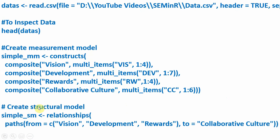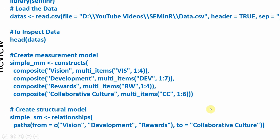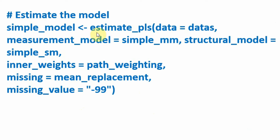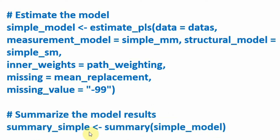Following this we specify our structural model — that is, what are the relationships in our model. These are the paths from vision, development, and rewards to collaborative culture. Following this step, the next is to estimate the model, which is similar to what we do in SmartPLS when running the PLS algorithm. You store your estimated PLS model in the simple_model object. Make sure you give this function the data, the measurement model, the structural model, the inner weights, how to deal with missing values, and then you save your estimated PLS model into this particular object through the summary function.